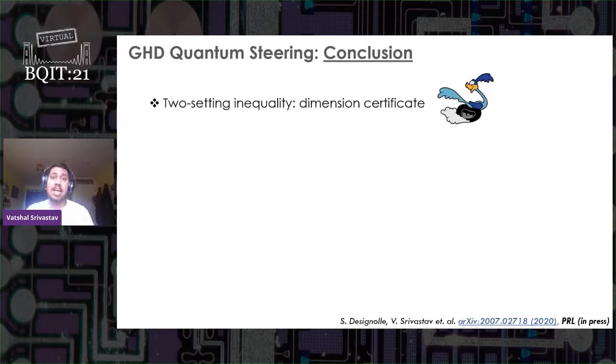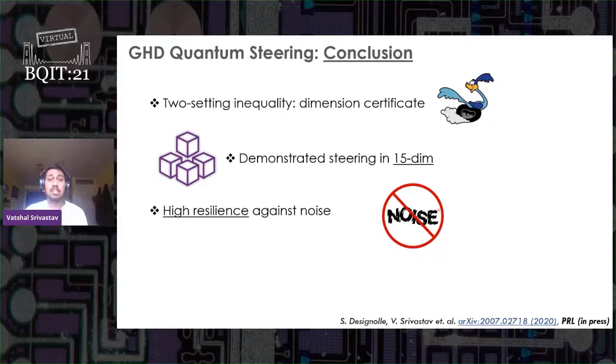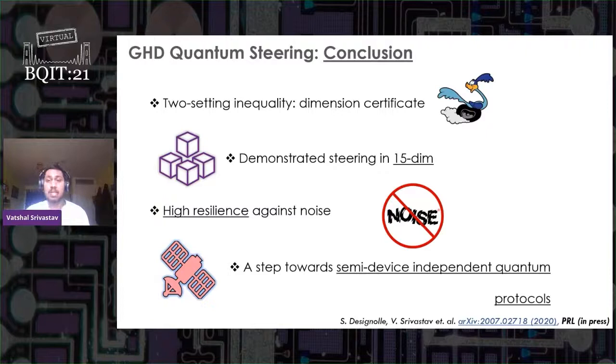So in conclusion, we formalize a simple two-measurement setting inequality that acts as a dimensional certificate, thus making it an efficient way to demonstrate steering experimentally in a very small time. We demonstrated steering up to 15 dimensions in the local space of 31 dim, thus certifying presence of entanglement in 15 dimensions. We showcase the advantage of working with high dimensions in terms of its high resilience against noise. This paves the way for all the quantum information protocols that are semi-device independent and a step forward to quantum key distribution in high dimensions.